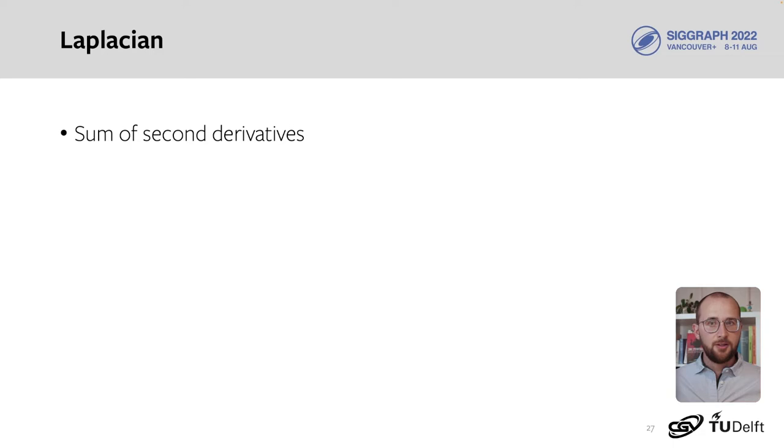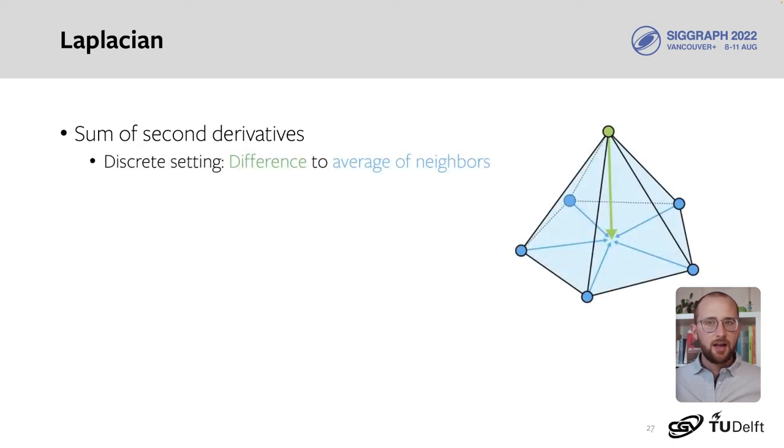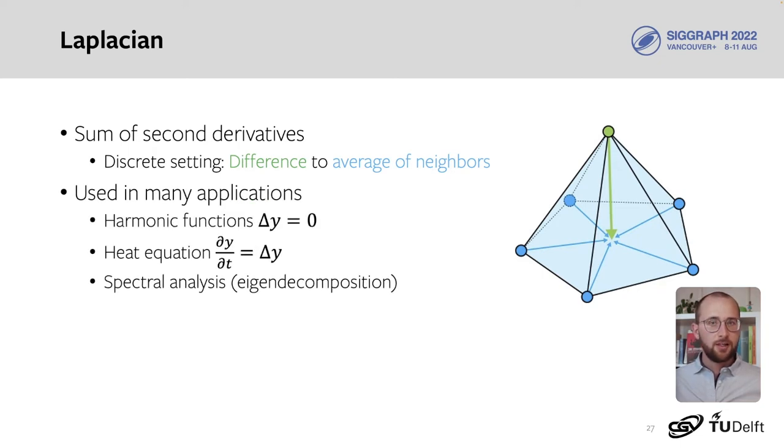Let's start by introducing the operators that we're using. First, the Laplacian. This operator computes the sum of second derivatives along every coordinate. An intuitive understanding in the discrete setting is that it computes the average of a point's neighbors, and then gives you the difference to that average. The Laplacian is widely used in differential equations and shape analysis, but a downside of using only this operator is that it's isotropic.